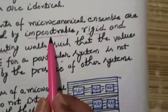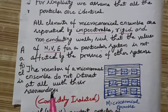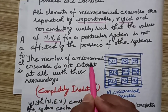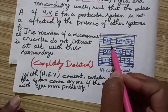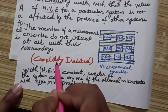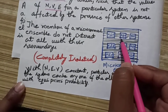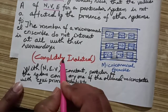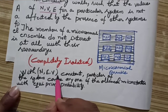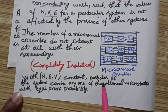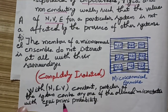Because the walls are impenetrable, rigid, and non-conducting, members of the micro canonical ensemble do not interact at all with their surroundings. Each system is completely isolated from the others. In the micro canonical ensemble, systems are completely isolated with N, E, and V constant, and particles of the system can be in any one of the allowed microstates with equal a priori probability.